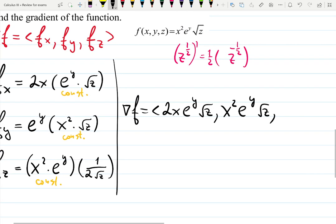x squared e to the y square root of z, comma, x squared e to the y divided by 2 square root of z. It's a point or not? No, it's a vector. So I'll put brackets like this.